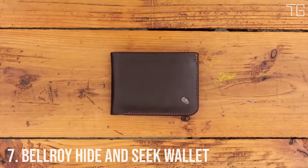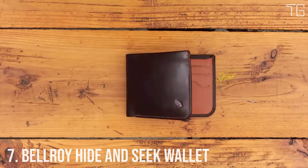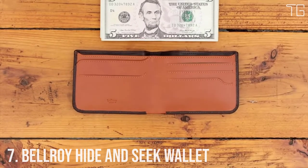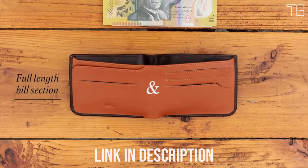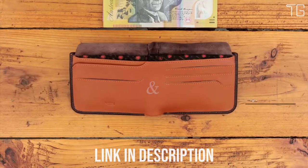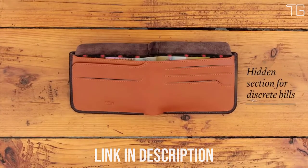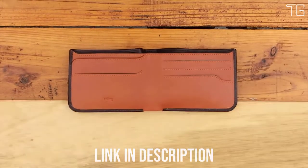Number 7. Bellroy Hide and Seek Wallet. A neat hide and seek wallet, a slim all-rounder with classic good looks and clever hidden storage for extra bills, coins or business cards. This wallet is made from premium eco-tan leather, sourced from leather working group gold-rated tanneries.